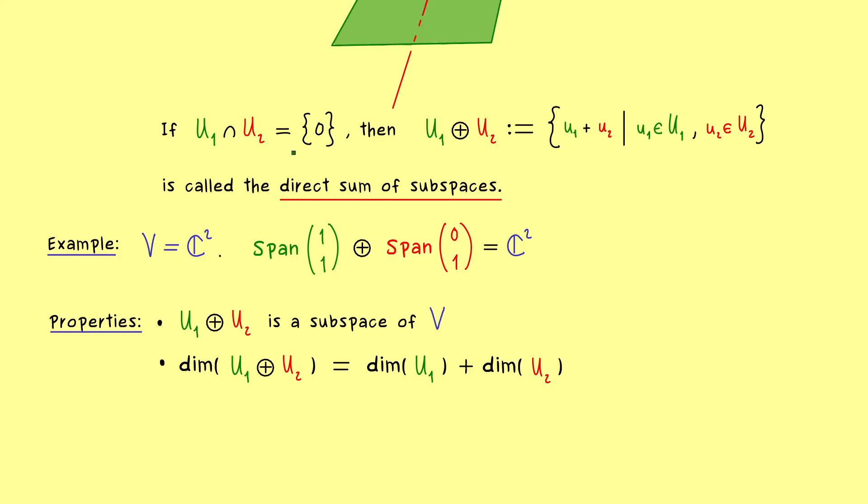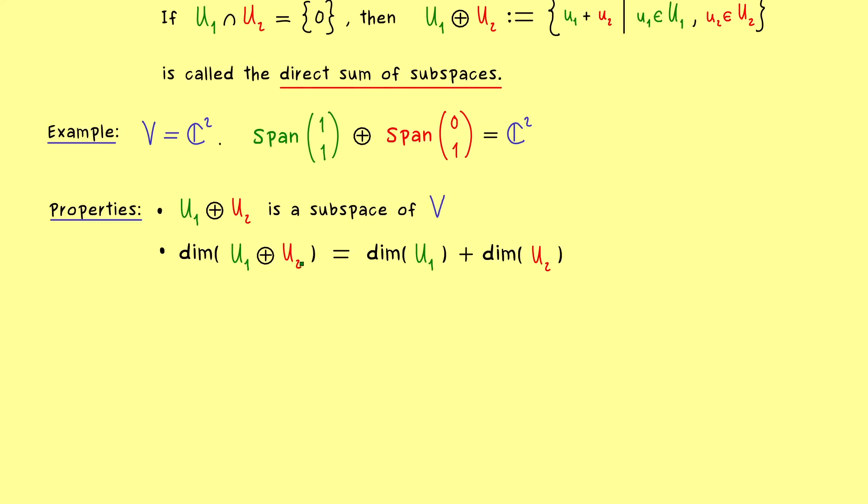Ok, so with that direct sum of subspaces in mind, we can go back to our Jordan normal form. So you could say, that this will be our application of the direct sum. This means, we also fix our vector space v as c to the power n, and take a general square matrix A. And now, if we have an eigenvalue of A, which we call lambda, we can define a new matrix N. And there, please recall, this one is simply given as A minus lambda identity matrix.